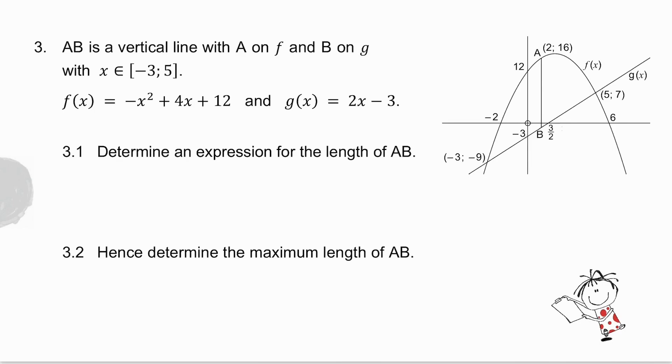The last question I want to look at is AB is a vertical line with A on the parabola and B on the straight line going between the points minus three and five. So AB is a line that moves between those two graphs. First question I'll ask you for is to determine an expression for the length of AB. And the second one is to get the maximum length of AB. What I want you to do is pause the video, try them, and then we will do them together.